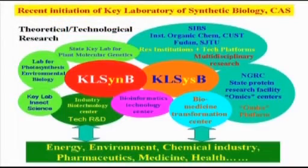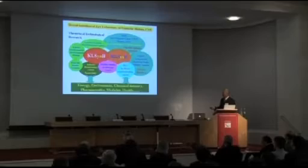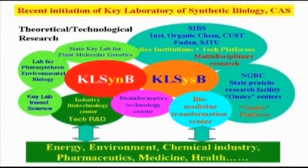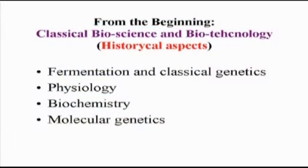In Shanghai, we established a laboratory of systems biology, and after that a laboratory of synthetic biology. These two laboratories are surrounded by many supporting fields, indicating this is a multidisciplinary area of research. We also have support from bioinformatics technology centers, computational power, biomedicine transformation centers, and industry biotechnology centers — to transform what we learn from basic research to real applications for society.